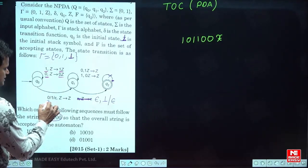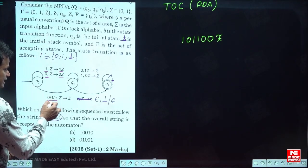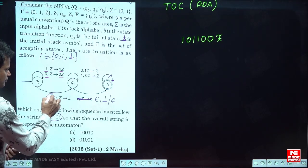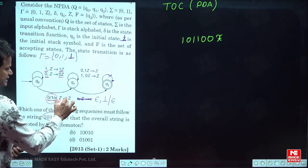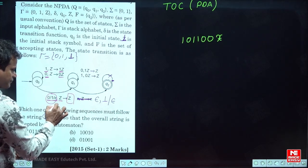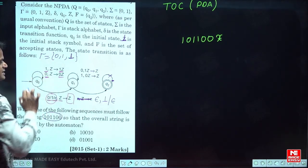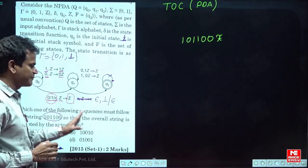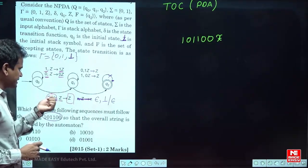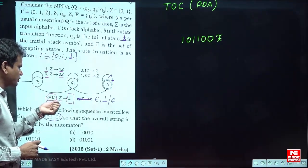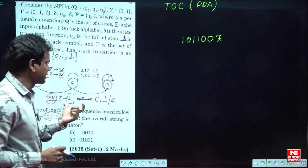After some time, when 0 comes, or 1 comes, or you can go for a null move also, you don't delete the top symbol — you keep it as is — but you change the state. The meaning of this is: after some time you can read 0, read 1, or without reading a symbol just change the state, but don't delete the top symbol.